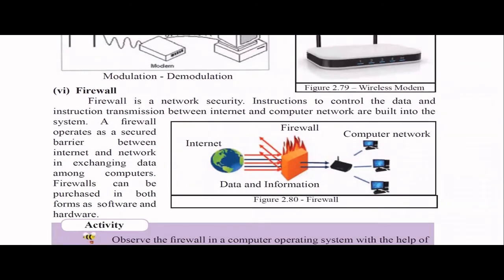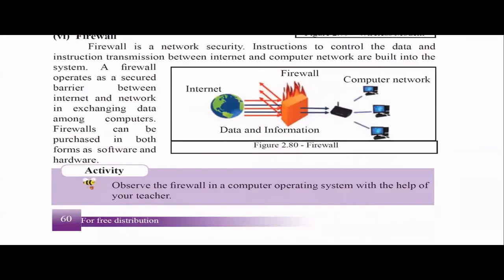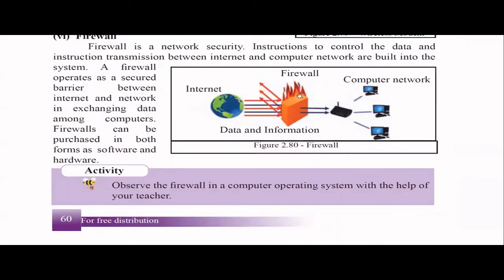Then comes the firewall, which is about network security. When using the internet and computer networks, the firewall acts as a secured barrier between the internet and your network — it acts as a protector. When exchanging information, the firewall ensures security. You can get firewalls as software or as dedicated hardware.